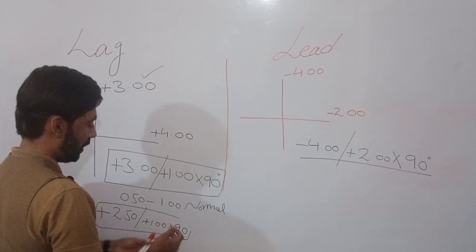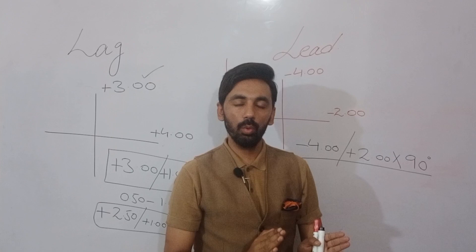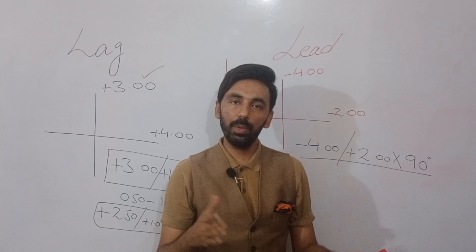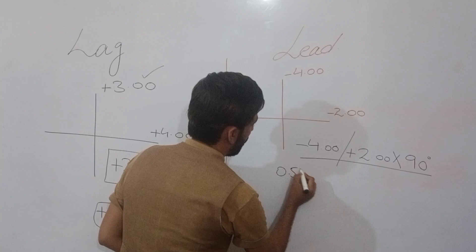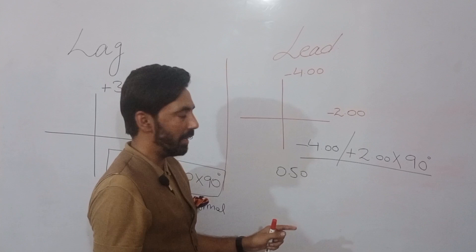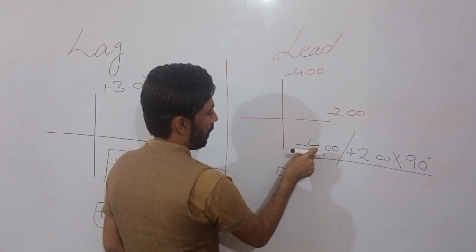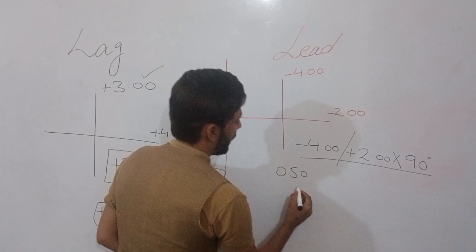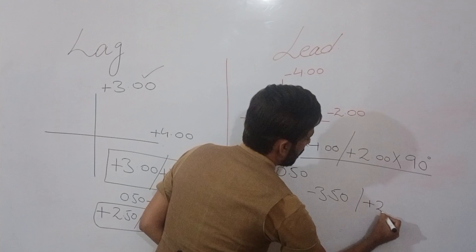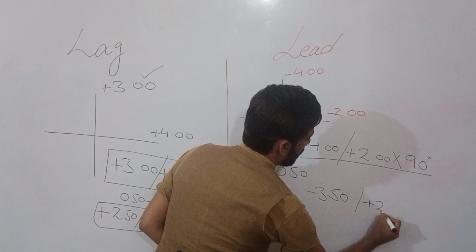As discussed in the lag case, a lead or lag of 0.5 to 1.00 D is normal in any person. Taking 0.5 as the normal lead of accommodation, when we subtract 0.5 from −4.00, the answer is −3.50. The cylinder remains the same in dynamic or static retinoscopy. So the resultant spherical value is −3.50, meaning −3.50 is the actual lead of accommodation in this patient.